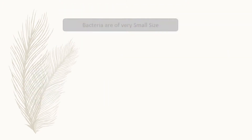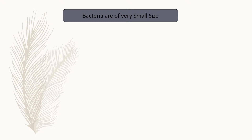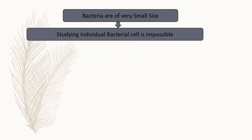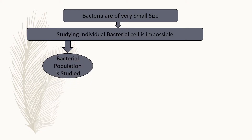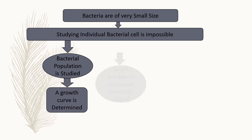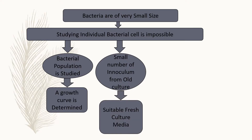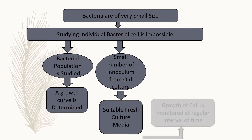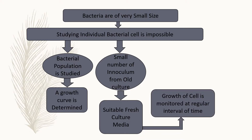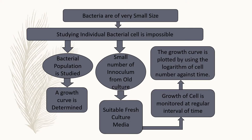As we all know, bacteria are of very small size, so studying an individual bacterial cell is impossible. Here a bacterial population is studied and a growth curve is determined. A small number of inoculum from old culture is inoculated in fresh culture medium, and after inoculation, the growth of the cell is monitored at regular intervals of time. A growth curve is plotted using the logarithm of cell number against time.